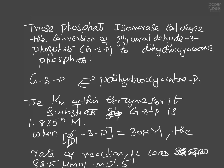In this tutorial I'm going to solve a problem related to enzyme kinetics. The enzyme triose phosphate isomerase catalyzes the conversion of glyceraldehyde 3-phosphate — I'll use the notation G3P — that's your substrate, to the product dihydroxyacetone phosphate. That's your enzymatic reaction with reactant on one side and product on the other.